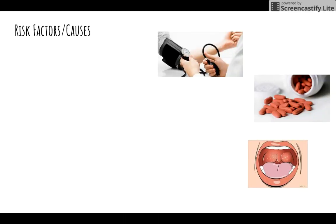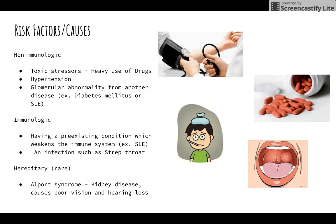Risk factors and causes. Non-immunologic: toxic stressors, hypertension, and glomerular abnormality from another disease. Immunologic: having a pre-existing condition which weakens the immune system, or an infection such as strep throat. Or it could be hereditary, such as having Alport syndrome, which is a kidney disease.